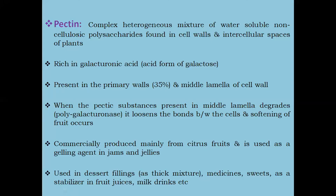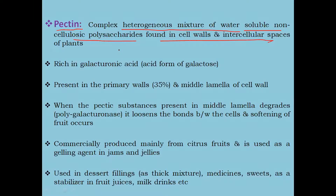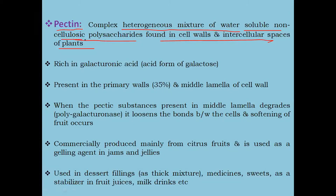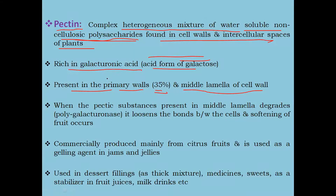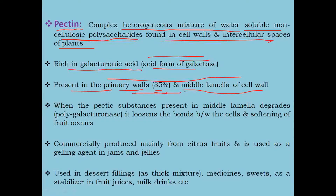The next important component is pectin. Pectin is a complex heterogeneous mixture of water-soluble non-cellulosic polysaccharides and is found in cell walls and intercellular spaces of plants. Pectin is rich in galacturonic acid, which is an acid form of galactose. Pectin is present in the primary cell walls at about 35% and in the middle lamella of the cell wall.